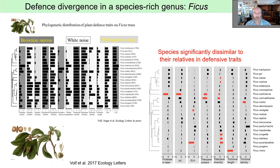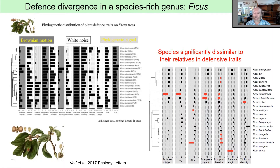A similar study by Martin Volf and his team on ficus fig trees in New Guinea examined different defensive characteristics — proteases, alkaloid concentration and diversity, polyphenols, specific leaf area, and more — and tested their development along the fig phylogeny. When looking at local fig tree communities, traits are significantly under-dispersed or over-dispersed. The red bars, which are significant, typically point towards negative values, meaning species are significantly less similar in these traits than expected when sharing the same community.